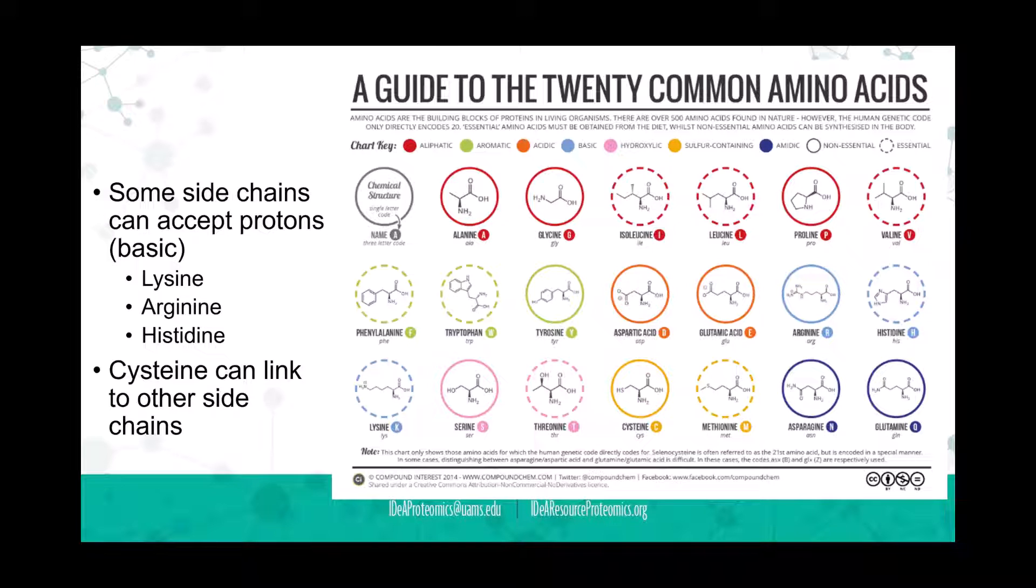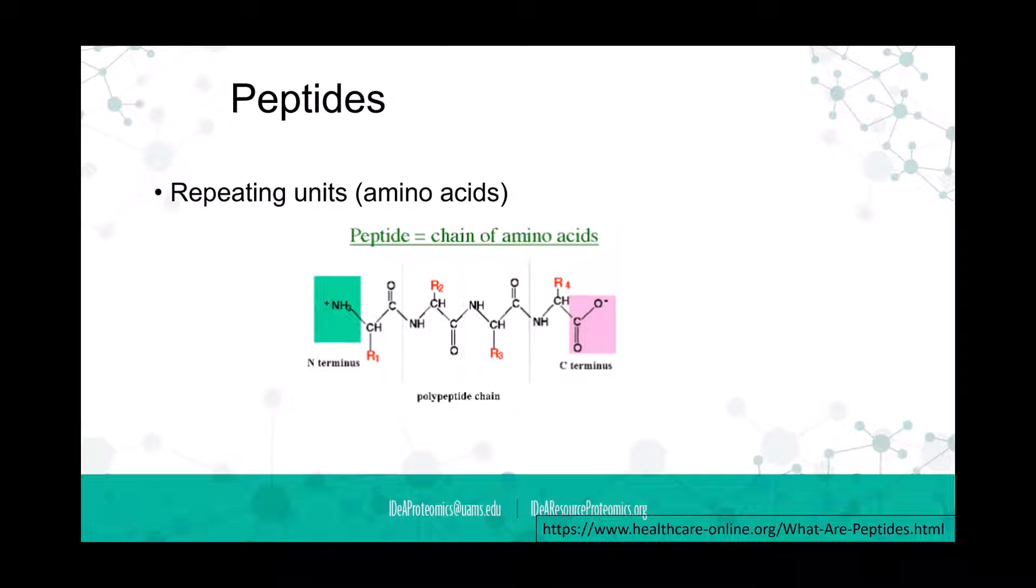A peptide is really just a repeating unit. We saw the chemistry where you can take two amino acids and put them together to make a dipeptide. You can continue to do that. This is an example of a tetrapeptide or polypeptide chain that now has four amino acids. We have an N-terminal on one side, which is the amine group.